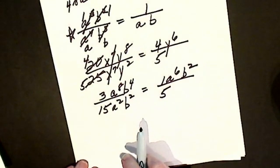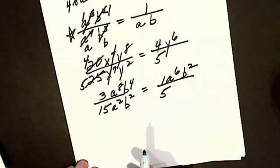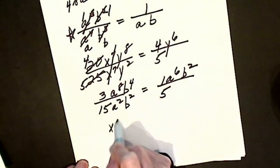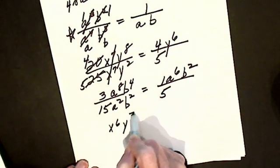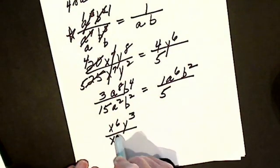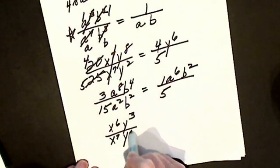We'll do another one. Let's say I have x to the 6th times y to the 3rd over x to the 7th, y to the 5th.